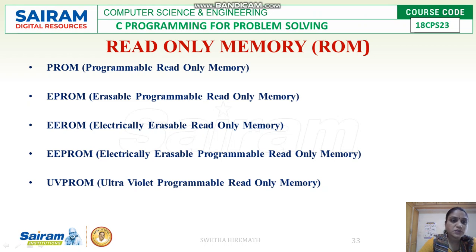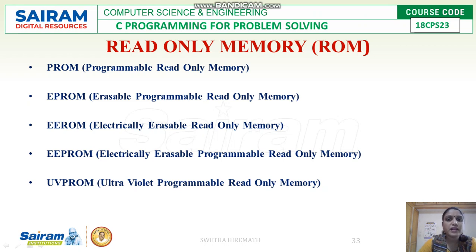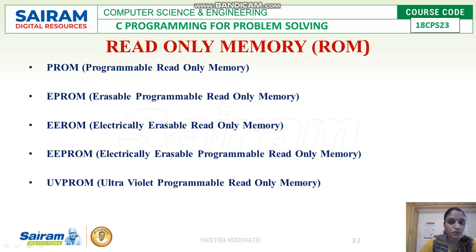PROM — programmable read-only memory — can only be programmed once; its contents cannot be changed afterward. Newer variants allow erasing and reprogramming. EPROM requires electrical power to erase contents and store new data. EEPROM allows both erasing and re-entering new programs or data. UV EEPROM — ultraviolet programmable read-only memory — is a newer technique used in read-only memory.